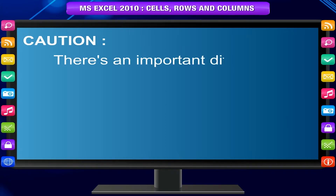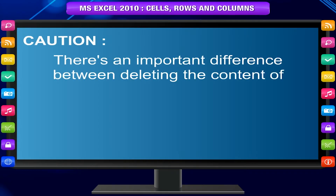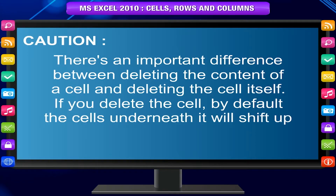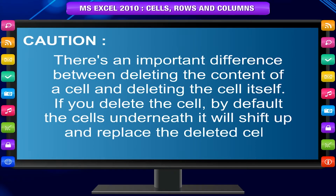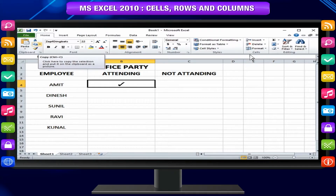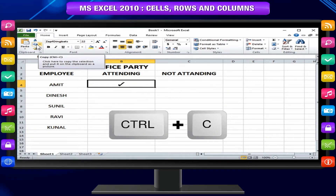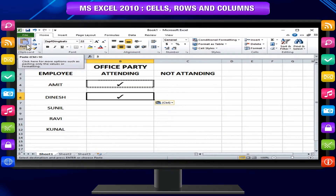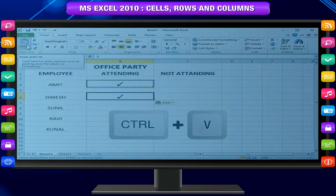There's an important difference between deleting the content of a cell and deleting the cell itself. If you delete the cell, by default the cells underneath it will shift up and replace the deleted cell. To copy and paste cell content, select the cell or cells you want to copy. Click the Copy command or press Ctrl+C. The cells will change their appearance. Select the cell or cells where you want to paste the content and click Paste or press Ctrl+V.